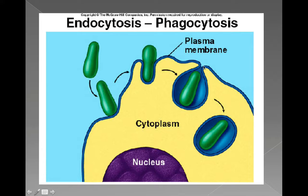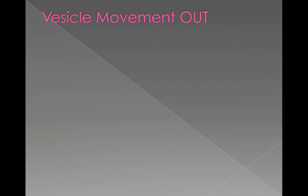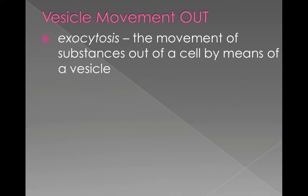Some of you might be thinking: if you're constantly pinching pieces off of the cell membrane, isn't the cell eventually going to get smaller? The answer is no, because of the next type of vesicle movement. Vesicle movement out of the cell is called exocytosis — the prefix exo meaning out of, cyto meaning cell. In this case, the vesicles are not formed by the cell membrane, but by the Golgi bodies.